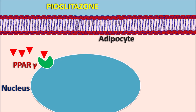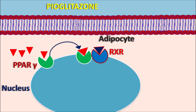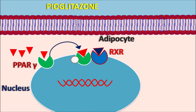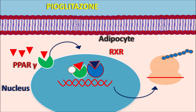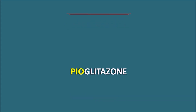Upon activation, PPAR-gamma undergoes dimerization — not as a homodimer but as a heterodimer — with retinoid receptors (RXR). After dimerization with RXR, the complex recruits coactivation factors. This entire complex then interacts with DNA within the adipocytes to promote gene transcription, which leads to protein synthesis. In this way, pioglitazone increases protein synthesis, producing proteins responsible for increased insulin sensitivity.